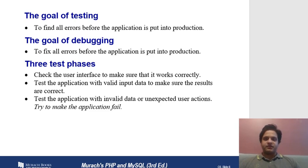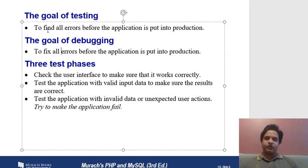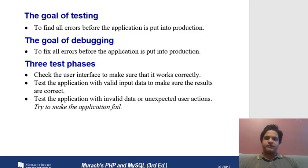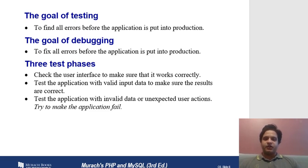Testing and debugging are different things. In testing, you write your code, run it, and then find out what the errors are — the goal is to find all errors before the application goes into production. In debugging, the goal is to fix all errors before the application goes into production. Testing finds errors; debugging fixes them.